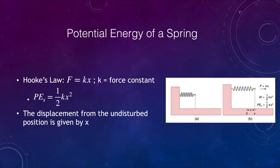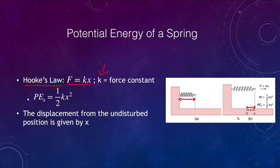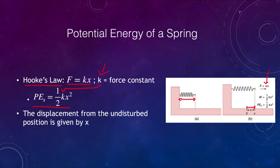Let's look at the potential energy of a spring. What we have is Hooke's Law, which states the force equals a constant k times x, where x is the displacement from the undisturbed position. If the spring is unstretched and we then stretch it an additional amount x, the force equals k — the force constant — times that stretch. The potential energy of the spring is one half k x squared. The further you stretch the spring, the more potential energy is stored and the higher the force.